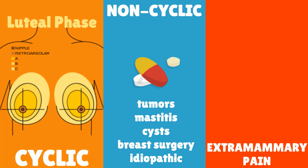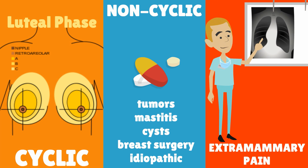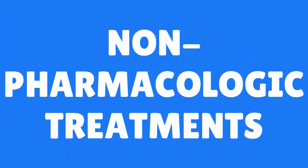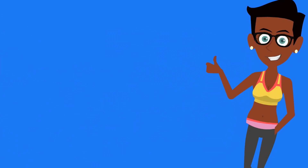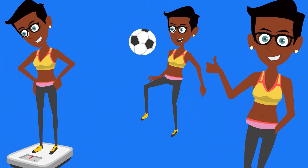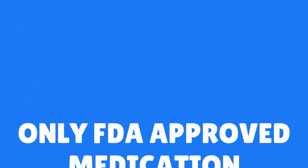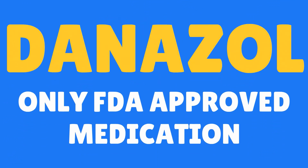Extra-mammary pain is pain that does not arise from the breast tissues, and it can arise from chest wall trauma, rib fractures, shingles, or fibromyalgia. Non-pharmacologic treatments for mastalgia include a tight-fitting bra or sports bra, weight reduction, and regular exercise. The only FDA-approved medication for mastalgia is Danazol, but this medication has significant side effects.